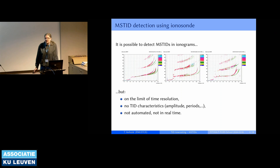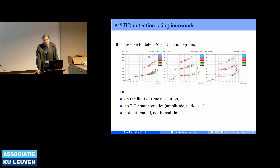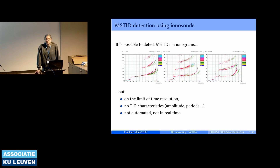These ionograms were already shown in Siva's presentation. As he explained, you can detect the presence of medium-scale TIDs in ionograms. However, there are significant limitations. We make ionogram soundings at five-minute intervals, and since we are talking about phenomena that can be as short as 10 or 15 minutes, this is really on the limit. You might have one ionogram with nothing, the next showing a signature, and the next already gone — so you only have one measurement of that particular wave passing over.